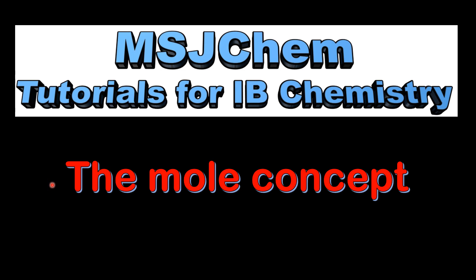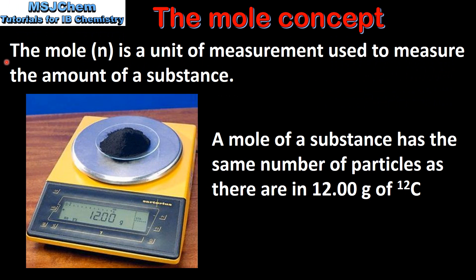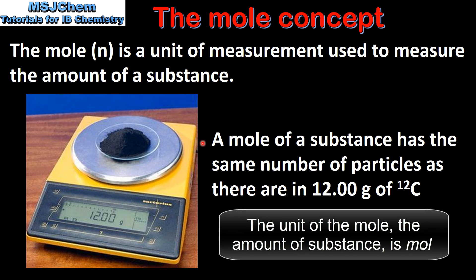This is MSJChem. In this video I'll be looking at the mole concept. The mole, which is given the symbol N, is a unit of measurement used to measure the amount of a substance. A mole of a substance has the same number of particles as there are in 12 grams of the isotope carbon-12.